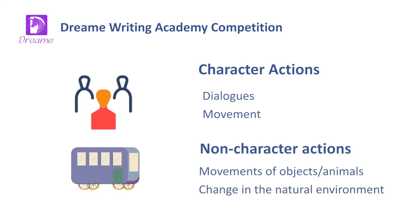In a synopsis, actions are typically divided into character actions — dialogues and movement — and non-character actions — movements of objects or animals, and a change in the natural environment. A good synopsis should be clear about who does what.